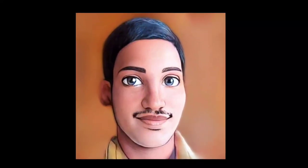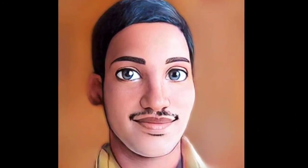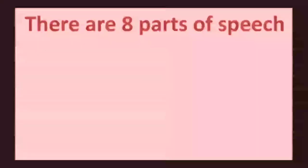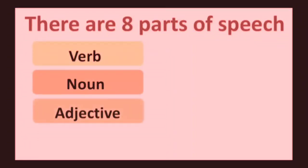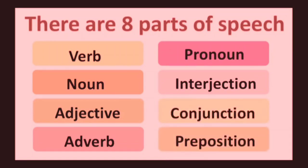Hello students. We are starting our first lesson: parts of speech. There are eight parts of speech. They are verb, noun, adjective, adverb, pronoun, interjection, conjunction, and preposition. Each one of these has a different function in a sentence. Let's learn them one by one.